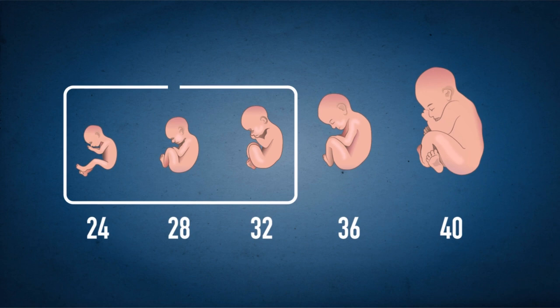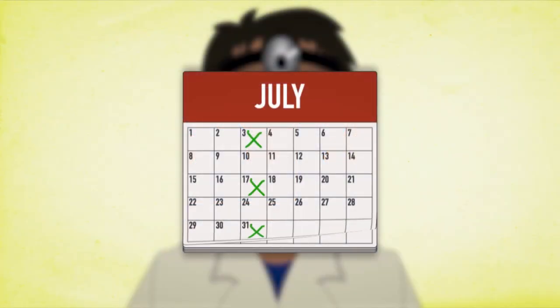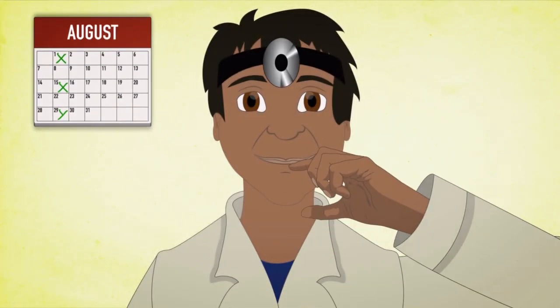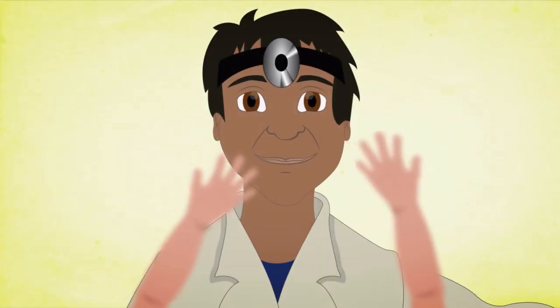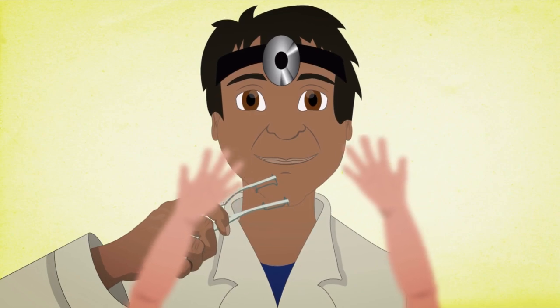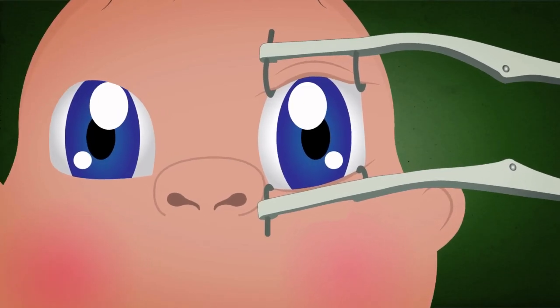Babies born more than eight weeks early need to have an eye exam every two weeks or more to check that their eyes are developing normally. This examination is very important as it can spot babies who need treatment to stop them from going blind.